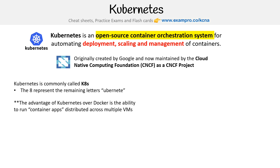The advantage of Kubernetes over Docker — because Docker is what people always think when they think of containers — is the ability to run container apps distributed across multiple virtual machines, or as we'll call them in the course, nodes. Now that's a gross simplification. Docker is not a simple apples-to-apples comparison; it's more apples to oranges. Docker is a suite of things — it's a runtime, it can have Docker Swarm which is an orchestration tool. So technically, a better comparison is between Kubernetes and Docker Swarm, but I'm just trying to keep it simple here.